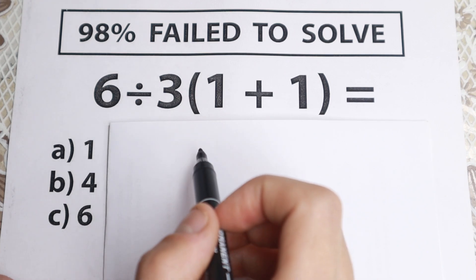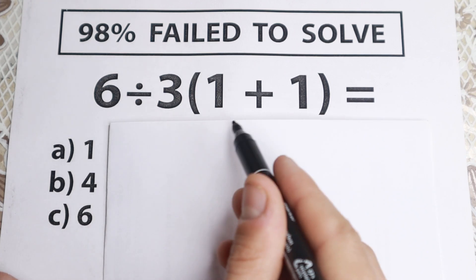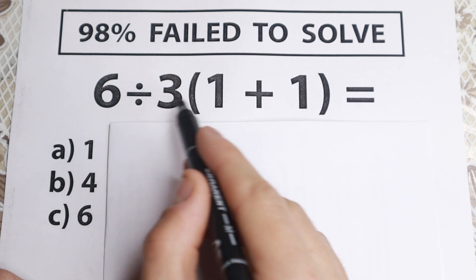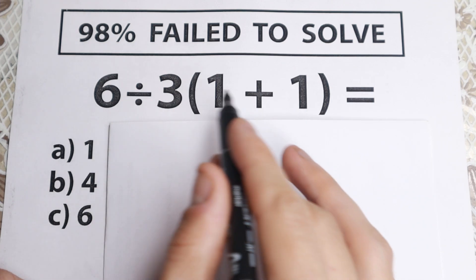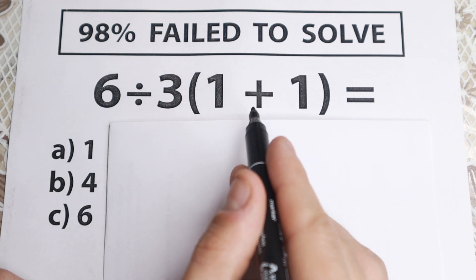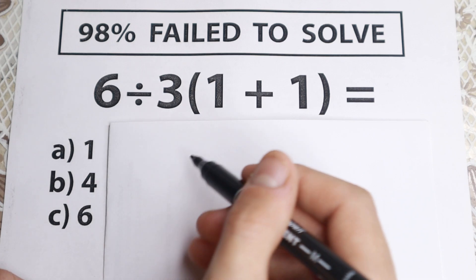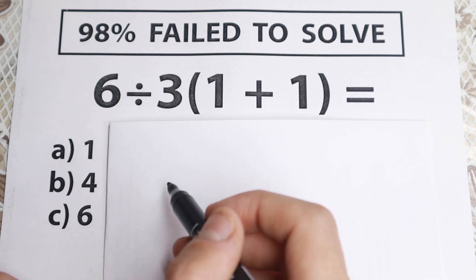Obviously whatever order you select is going to create a different answer. If you start with parentheses, if you start with division, multiplication, if you choose this order you will have a different answer. And this is the trick right here. And in this video we are going to understand what is the correct order to do this problem.